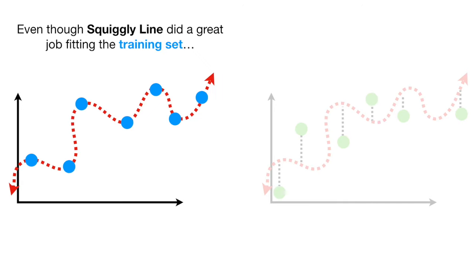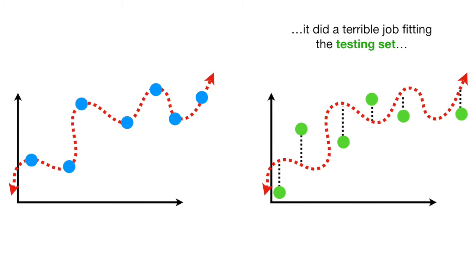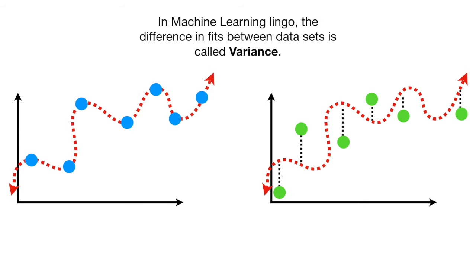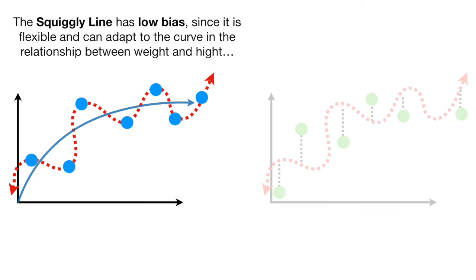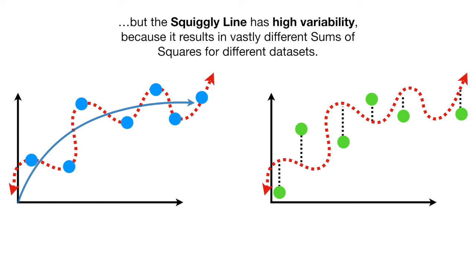Even though the squiggly line did a great job fitting the training set, it did a terrible job fitting the testing set. In machine learning lingo, the difference in fits between data sets is called variance. The squiggly line has low bias since it is flexible and can adapt to the curve in the relationship between weight and height. But the squiggly line has high variability because it results in vastly different sums of squares for different data sets.